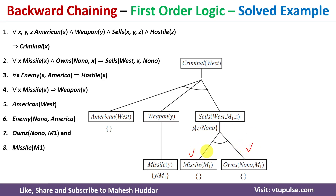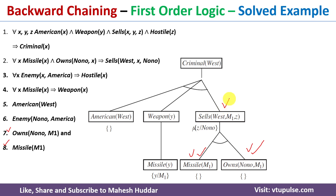Next, we prove each of these premises individually. Missile M1 is true because the eighth statement states that M1 is a missile — that is a fact. Similarly, the seventh statement says M1 is a missile owned by Nono, so Owns Nono M1 is also true. Because both premises are true, Sells West M1 Nono is also true.